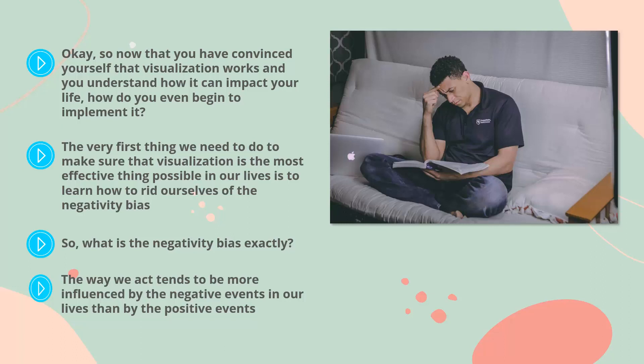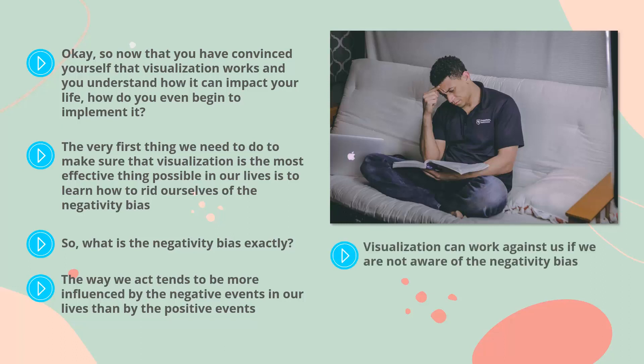For example, if we experience painful or traumatizing events, those tend to impact us more than things that aren't as extreme or even positive. The way we act tends to be more influenced by the negative events in our lives than by the positive events. It can cause us to view things in a biased light and assume that we are not worthy of the positive lives and circumstances that we most want.